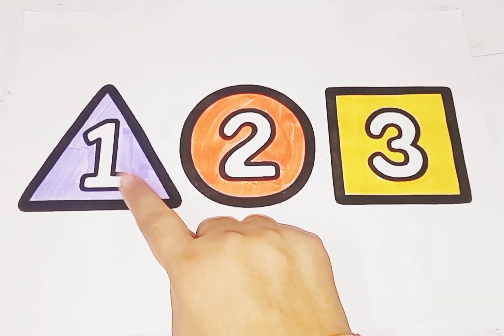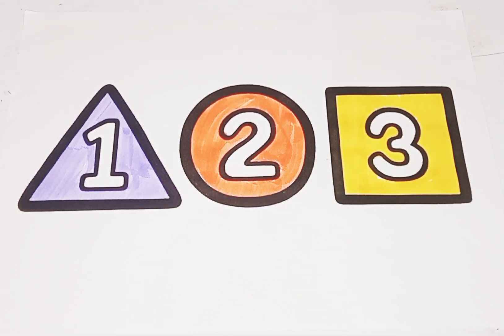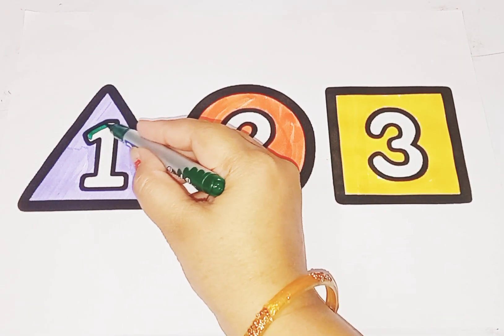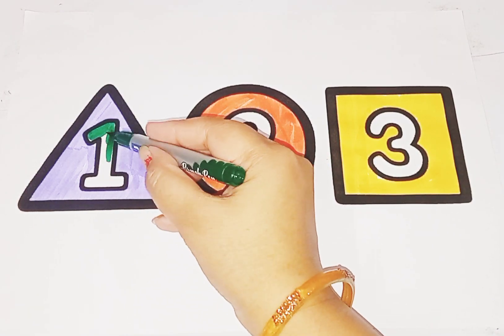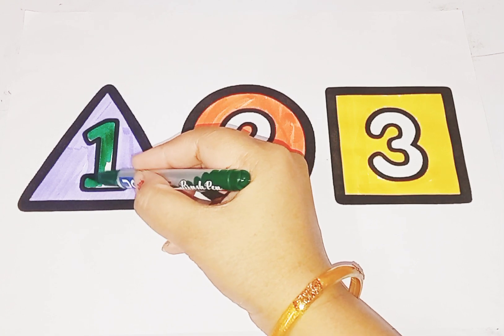One, two, three. Green color number one, O-N-E one, O-N-E one. This is number one.